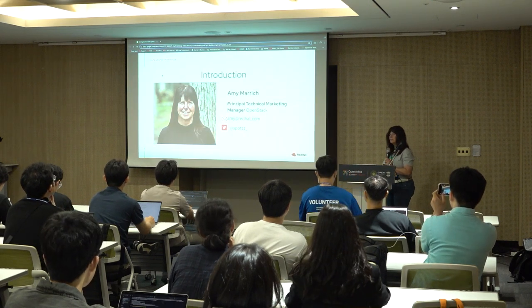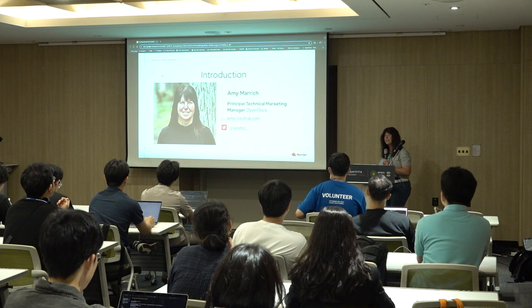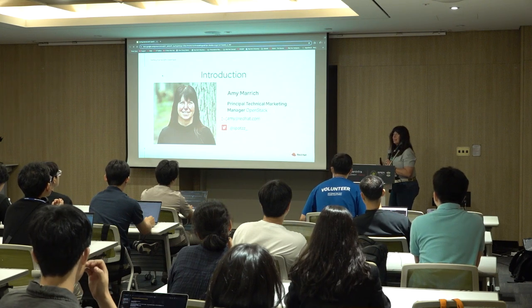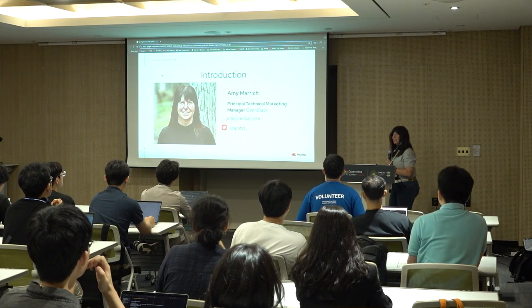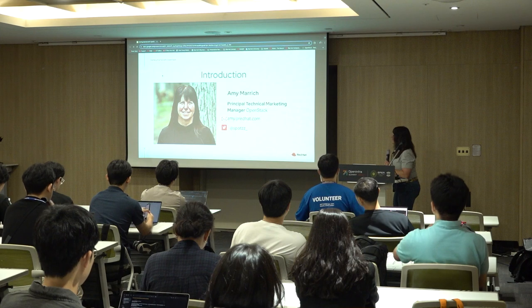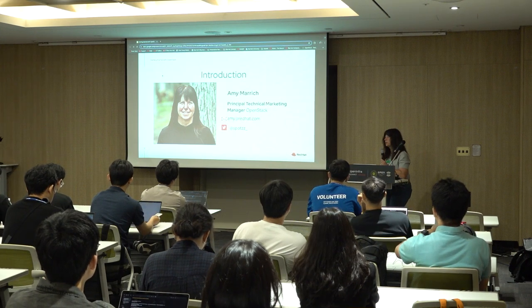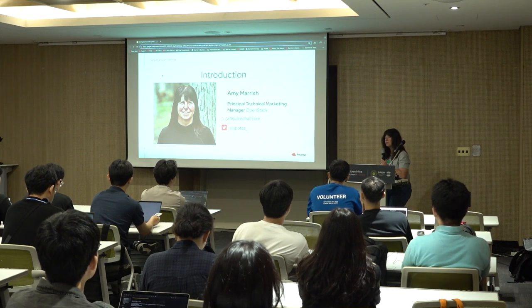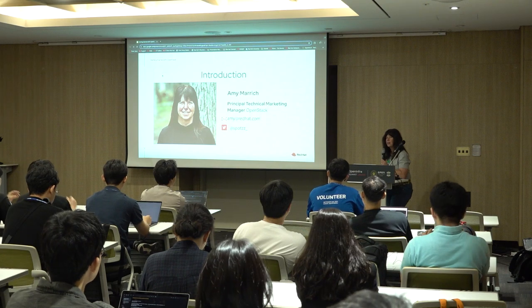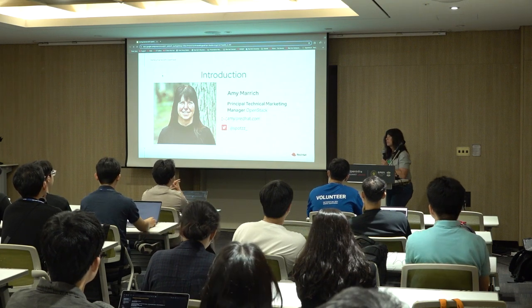If you need to email me, I've got the easiest email ever: Amy at Red Hat. I am not an early Red Hatter — I just asked for it and it was available. My Twitter is Spots with two Z's and an underscore. If you're looking for me on IRC or Matrix, I'm just Spots.